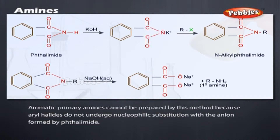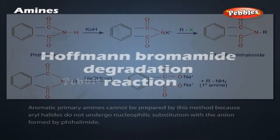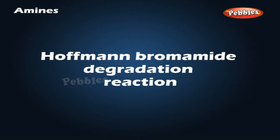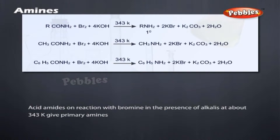Hoffmann's Bromamide Reaction: Acid amines on reaction with bromine in the presence of alkalies at about 343 K give primary amines.